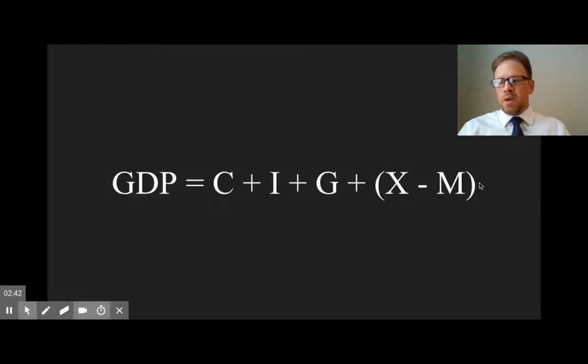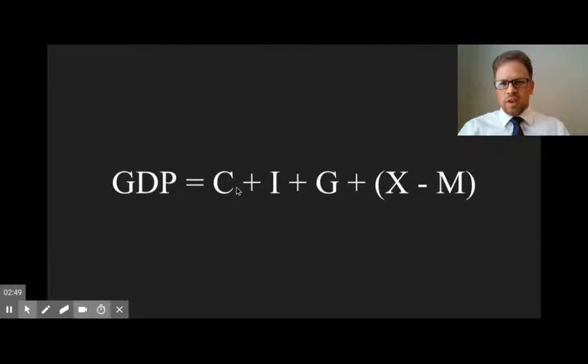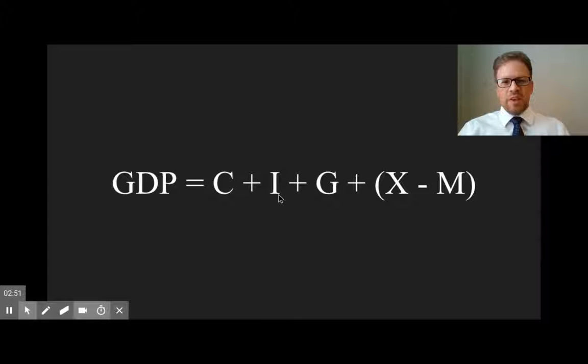GDP can be calculated using the following equation: GDP equals consumption, meaning all the things that people buy in the country, plus investment, meaning all the money that is invested in that country that year, plus government spending, meaning all the money that the government has spent, plus net exports, which is your exports minus your imports - all of the things produced in other countries that we're purchasing.